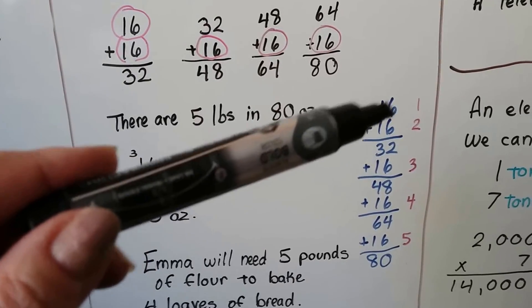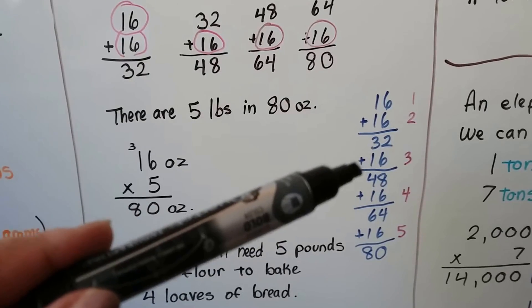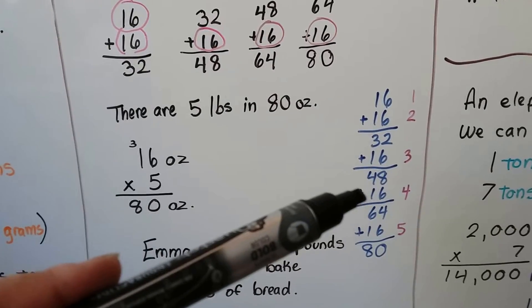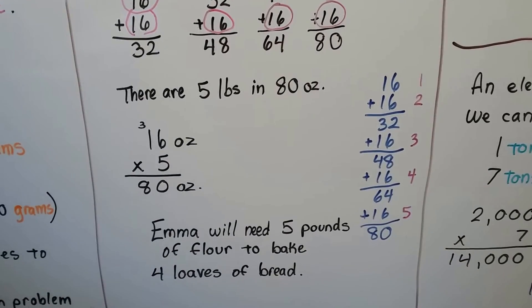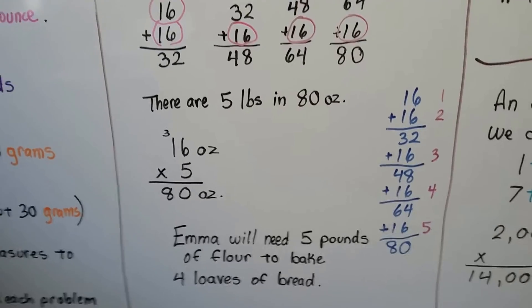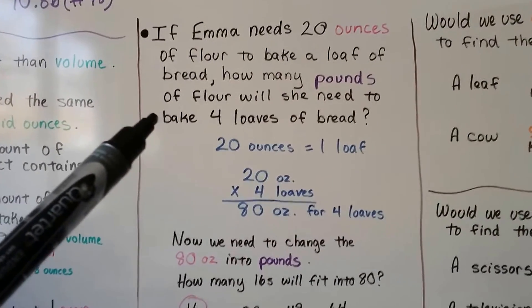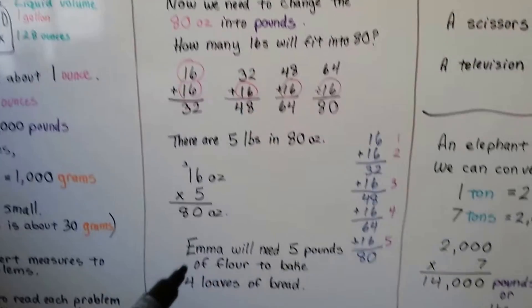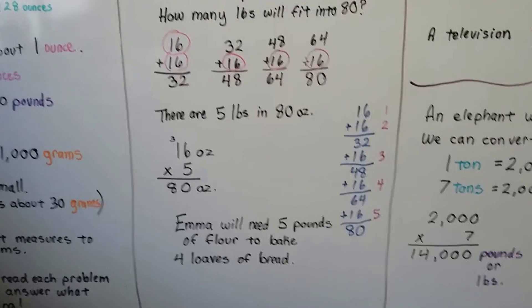16 plus 16 would be 2 pounds. We get 32. Add another 16 for 3 pounds, get 48. Add another 16 for 4 pounds, get 64. And add another one to get 80. So she'll need 5 pounds of flour to bake 4 loaves of bread. And it asked us, how many pounds of flour will she need to bake 4 loaves of bread? And we're answering exactly what it asked, 5 pounds to make 4 loaves of bread.